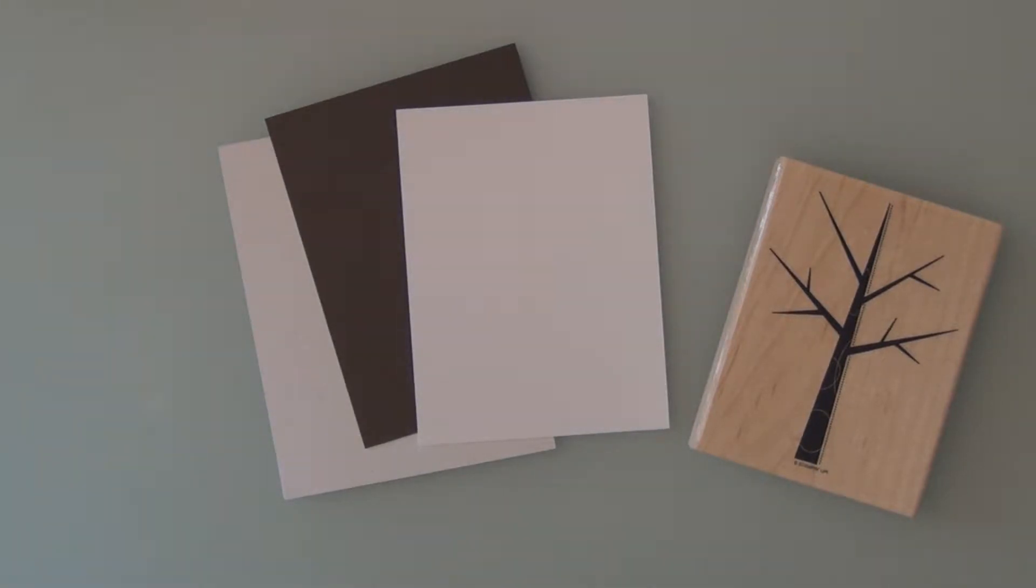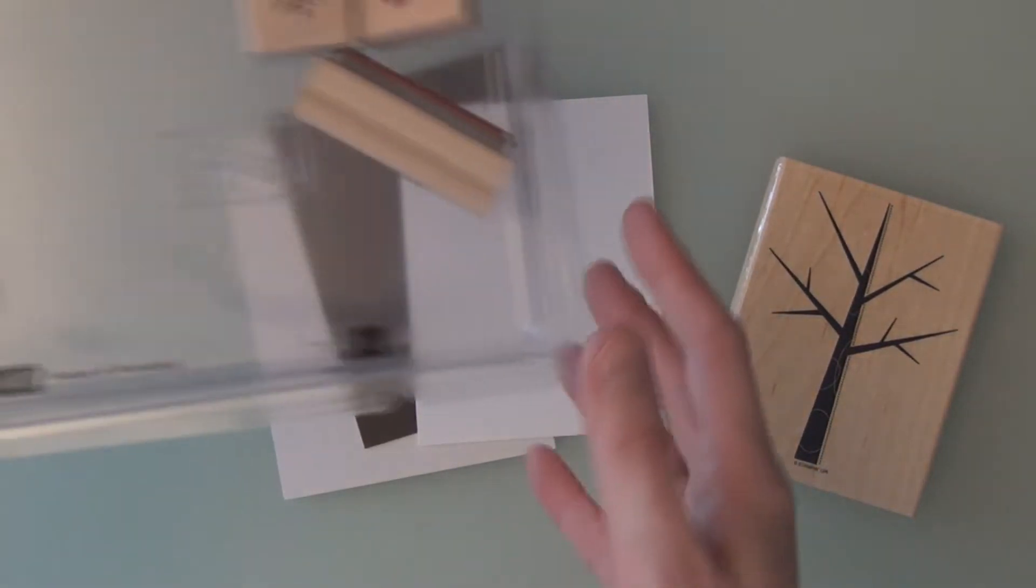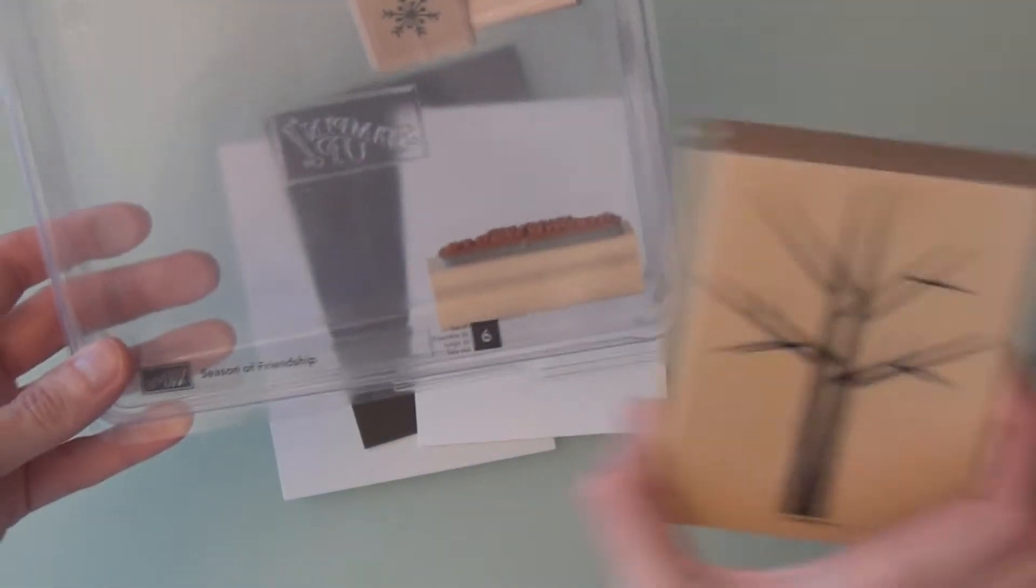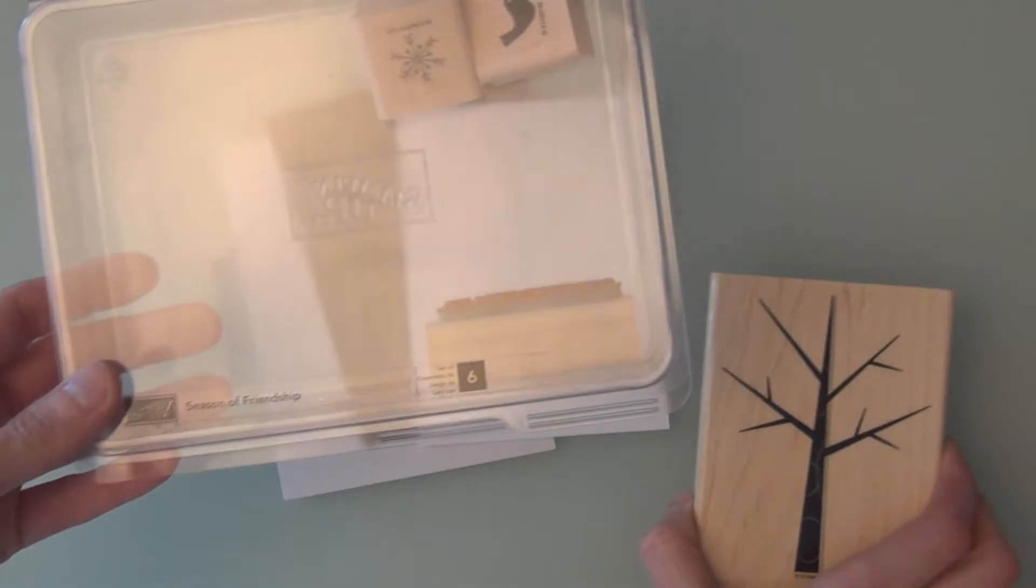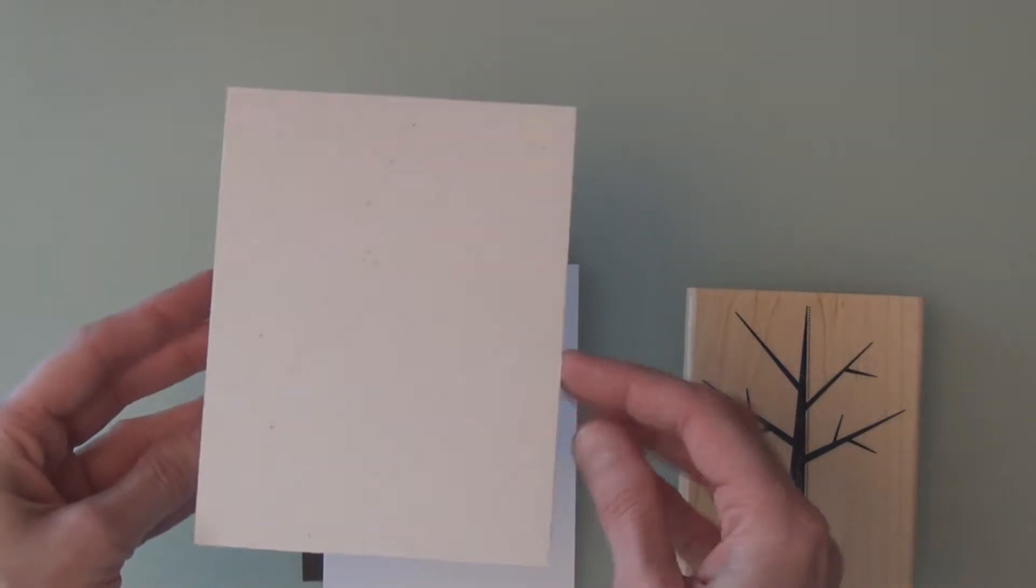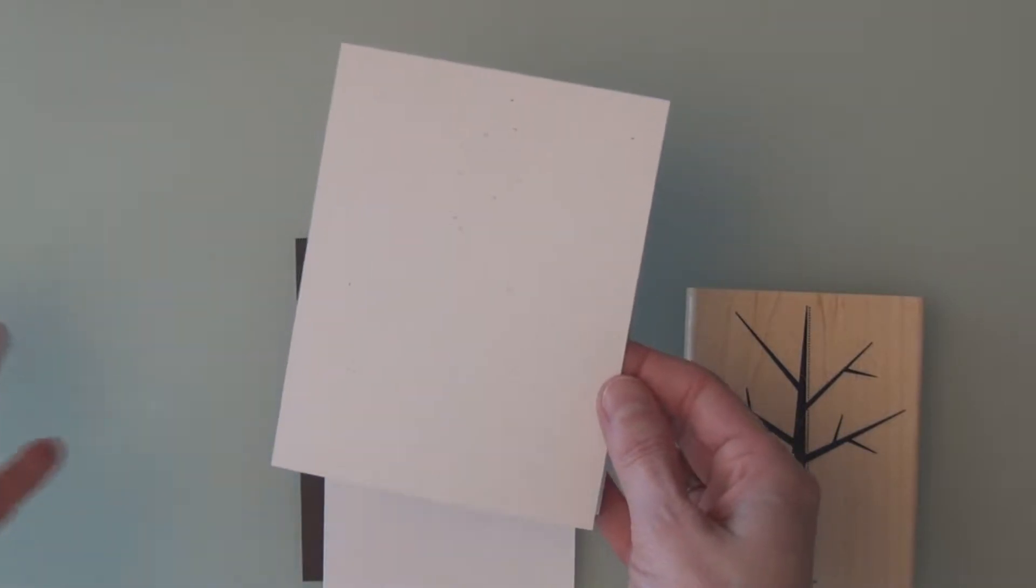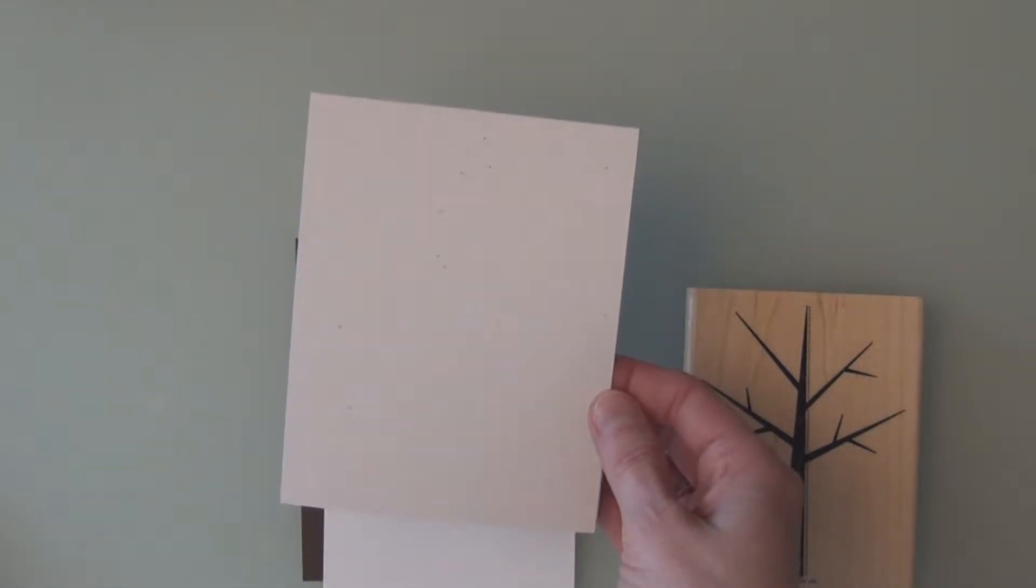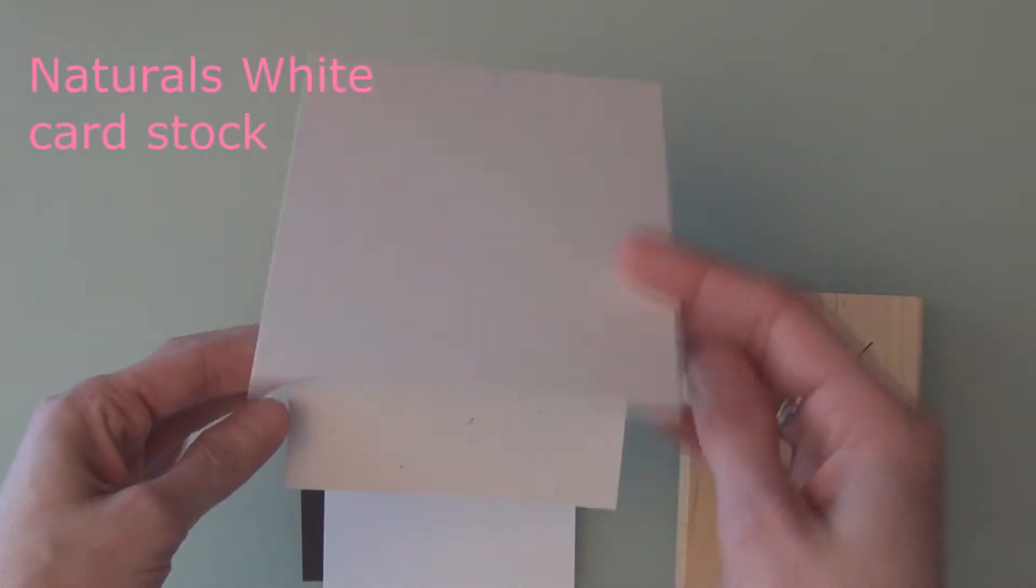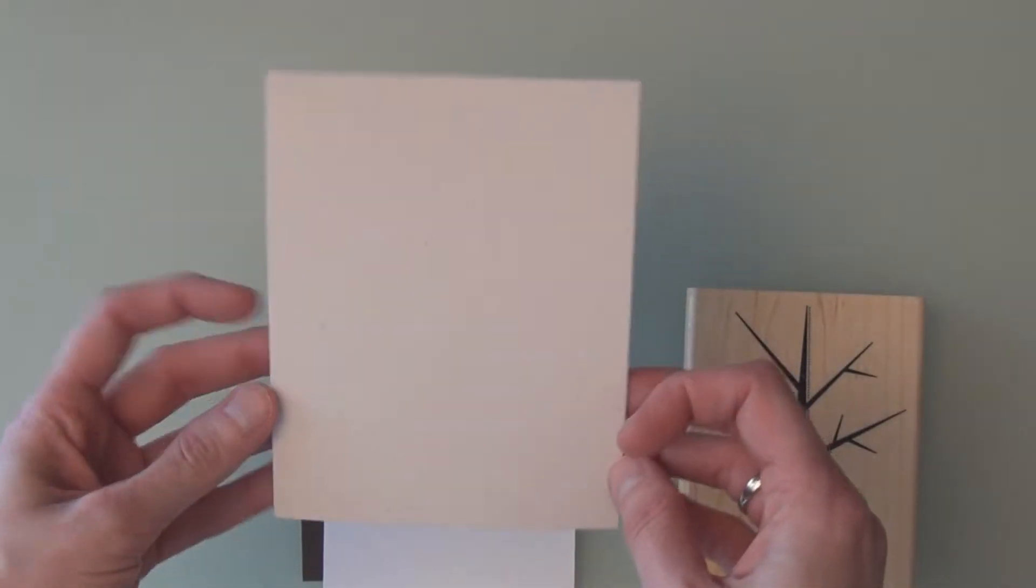So let's get started. I have an older Stampin' Up set that I love, Season of Friendship. It comes with a tree, and I have an A2 card. I went ahead and did all the cutting. No one wants to see me doing any cutting.